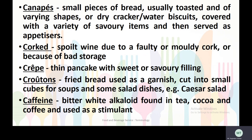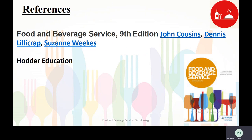Corked refers to a spoiled wine due to a faulty or mouldy cork or because of bad storage. Crêpe is a thin pancake with sweet or savory filling. Croutons are fried bread used as a garnish, cut into small cubes for soups and some salad dishes, such as Caesar salad. Caffeine is a bitter white alkaloid found in tea, cocoa, and coffee, and is used as a stimulant.